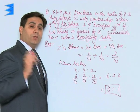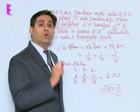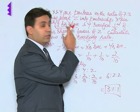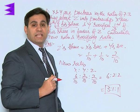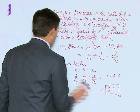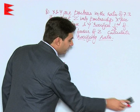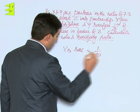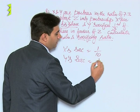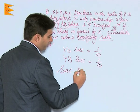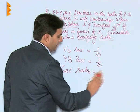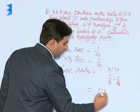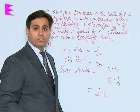We are also required to calculate the sacrificing ratio. Sacrifice equals old share minus new share. In this question, we had already calculated the sacrifices: X's sacrifice was 1/10 and Y's sacrifice was also 1/10. The sacrificing ratio for X and Y is 1/10 : 1/10. With 10 as the common denominator removed, the sacrificing ratio is 1:1.